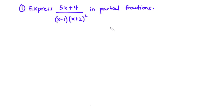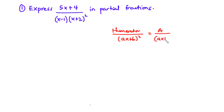Given a rational function which has a numerator and the denominator is made up of a repeated factor in the form ax plus b all squared, then the repeated factor is going to have two partial fractions in the form A over ax plus b and then B over ax plus b all squared, where both A and B are constants.